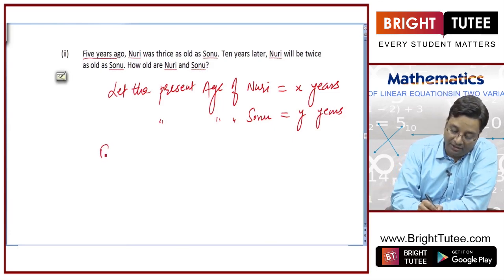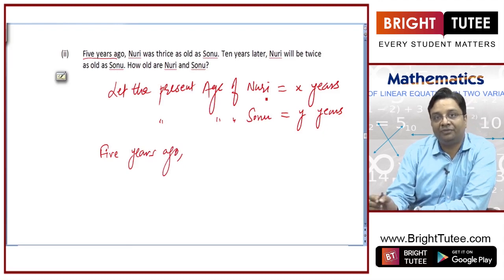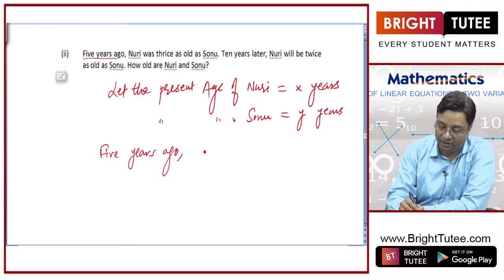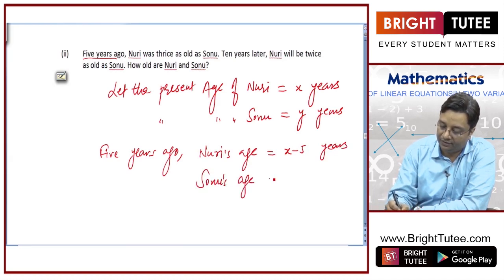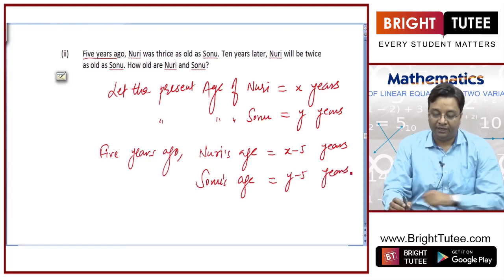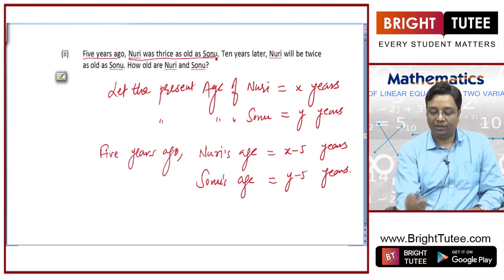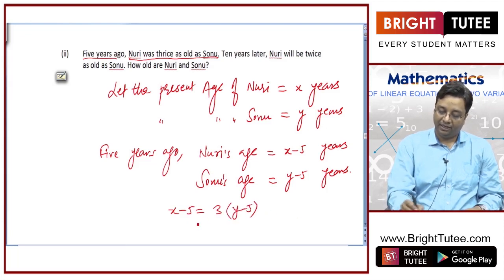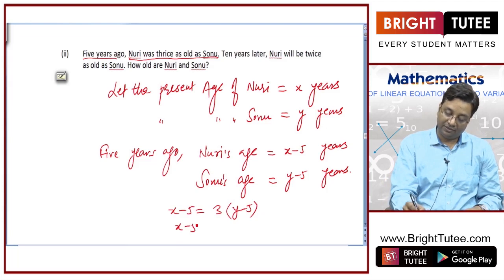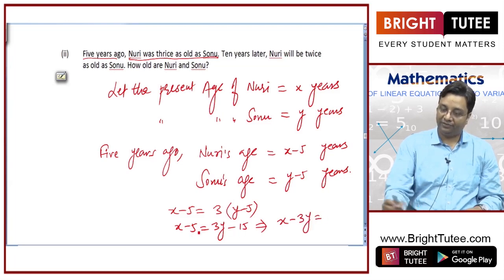5 years ago, Nuri was x minus 5 years old and Sonu was y minus 5 years old. It is given that 5 years ago Nuri was thrice as old as Sonu. So, x minus 5 equals 3 times y minus 5. This gives us x minus 5 equals 3y minus 15, hence x minus 3y equals minus 10. This is our equation number 1.